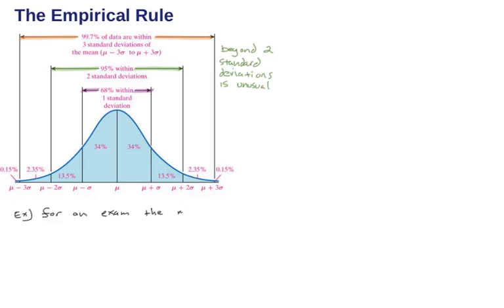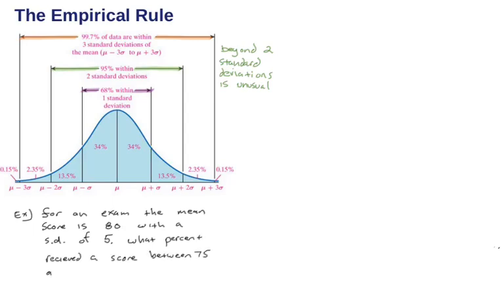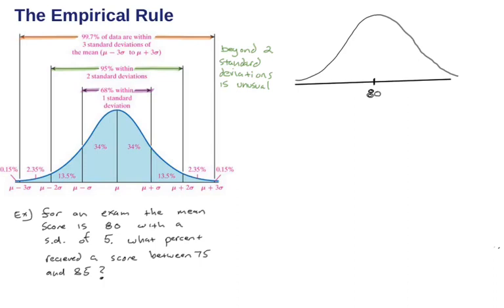Let's do an example. For an exam, the mean is 80 with a standard deviation of 5. What percent received a score between 75 and 85? Let's do a sketch of a normal distribution, with 80 right in the middle. Going out in increments of 5 — which is one standard deviation — we mark 85, 90, 95 to the right and 75, 70, 65 to the left. We can also label that x-axis in terms of z-scores.